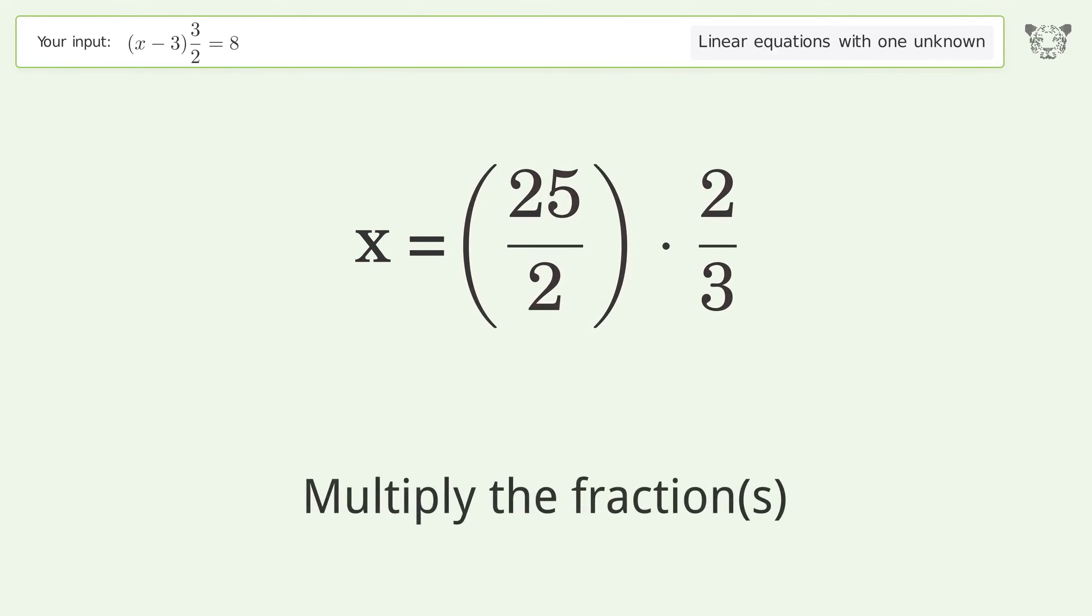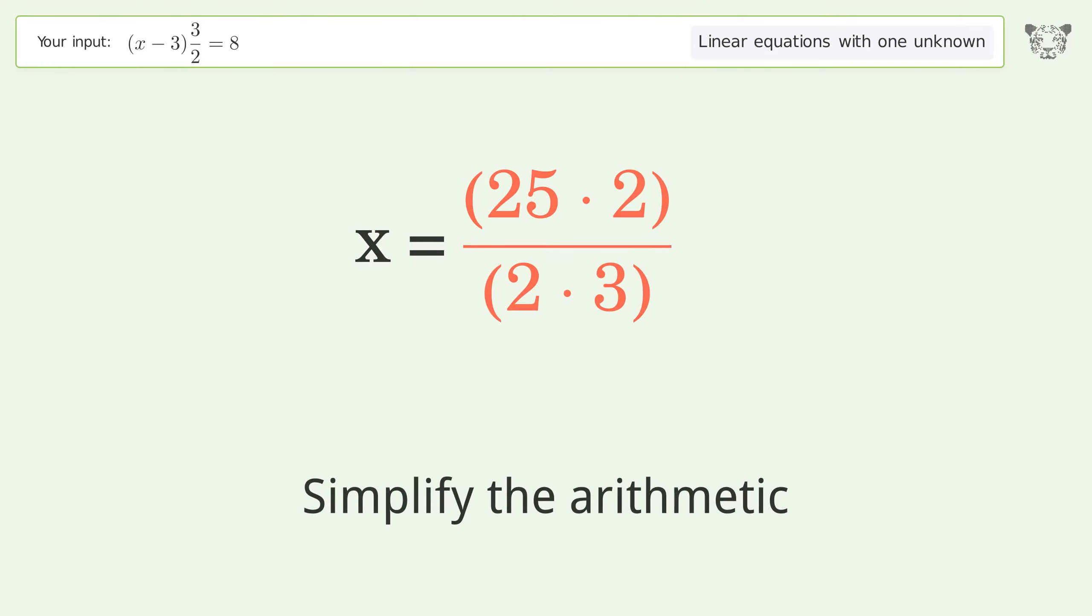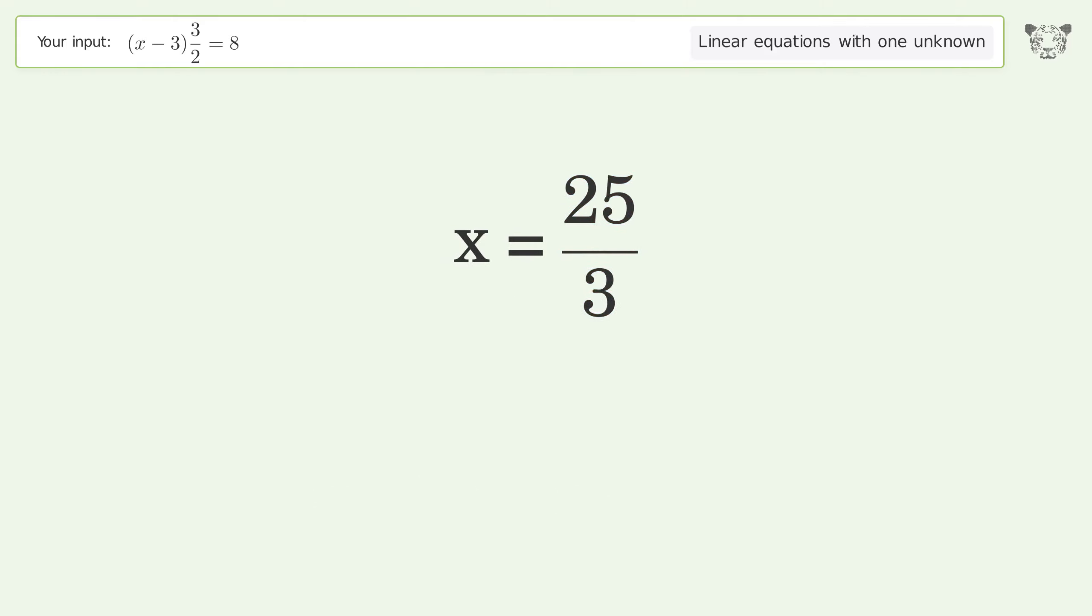Multiply the fractions. Simplify the arithmetic. And so the final result is x equals 25 over 3.